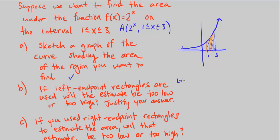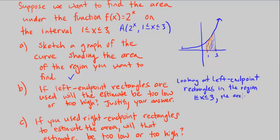Well, looking at the curve at left endpoint rectangles in the region 1 less than x less than 3, what do you notice? It will be an under estimate, the area, the under estimate means too low, will be too low.